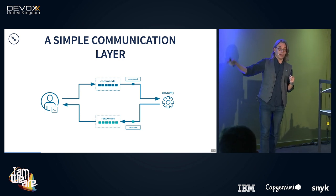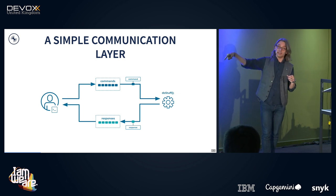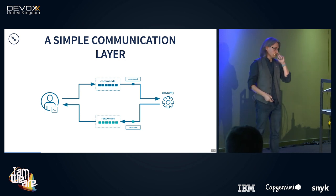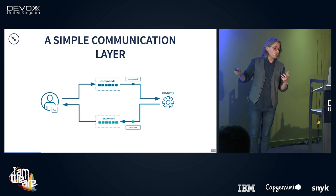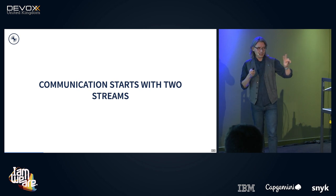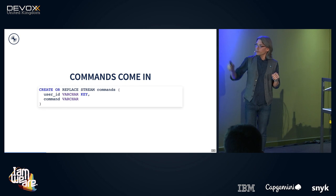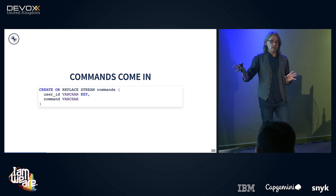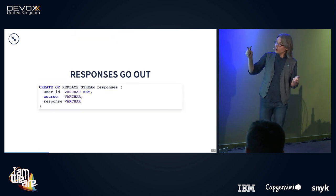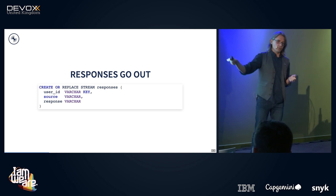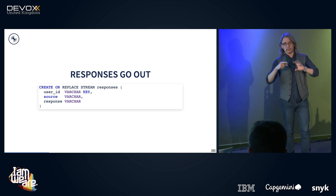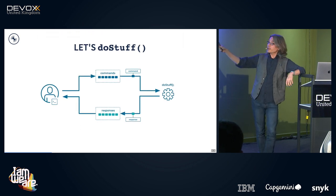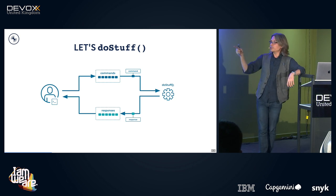When I wrote this, I pretty much wrote all the code for the web server and just left it running. In a separate process, the 'do stuff' is a separate Java process that can change independently. The dumbness of the web server is a feature — it doesn't change, it just stays up and running. So we've got two communication streams, and yes, this is looking a little bit like CQRS. We create a stream called 'commands' with a user ID — in reality a UUID — and the command as a plain string. The response stream is almost identical, with an added source field for debugging.